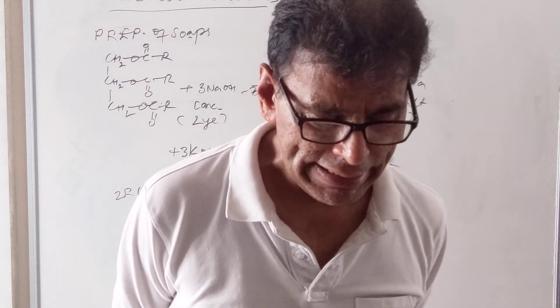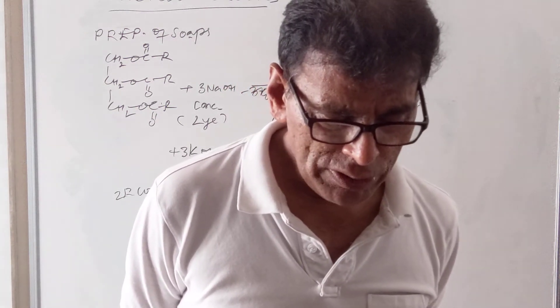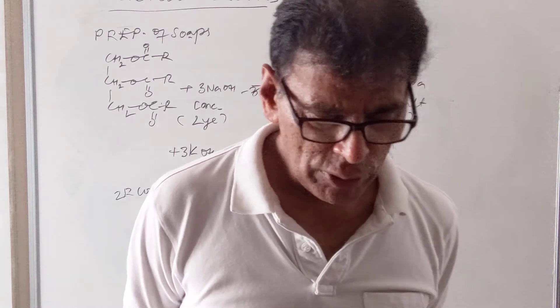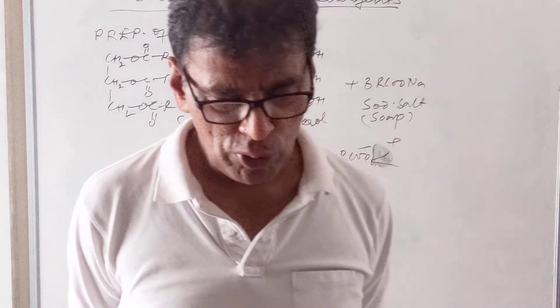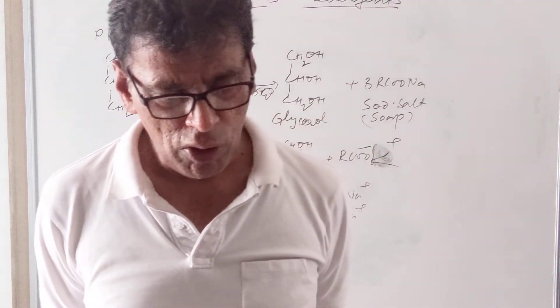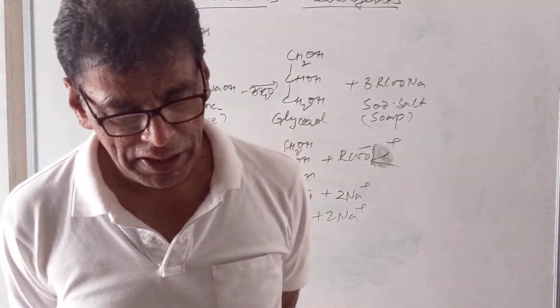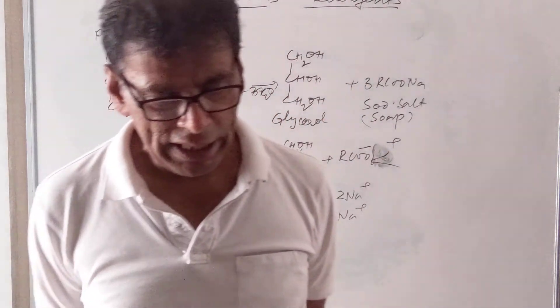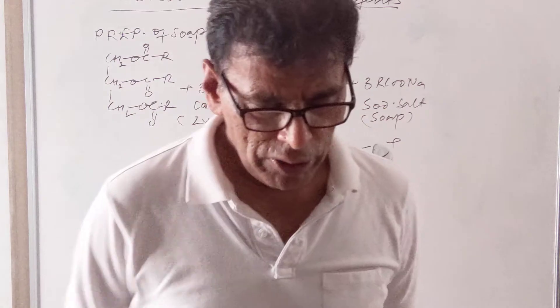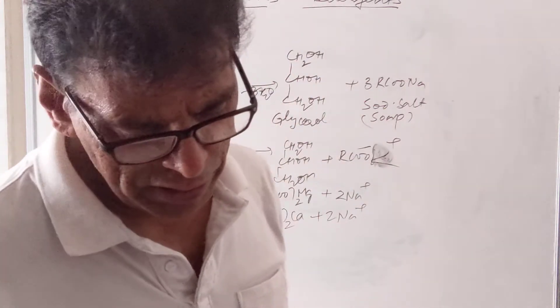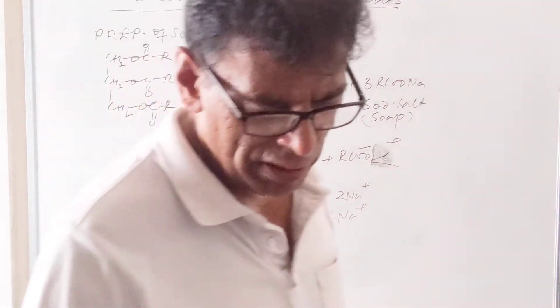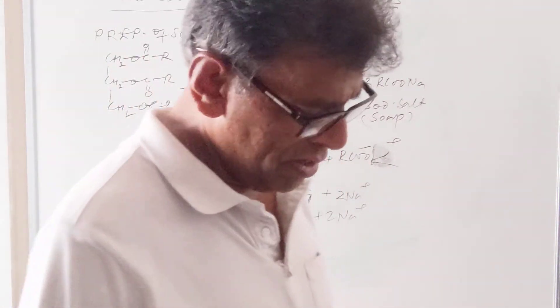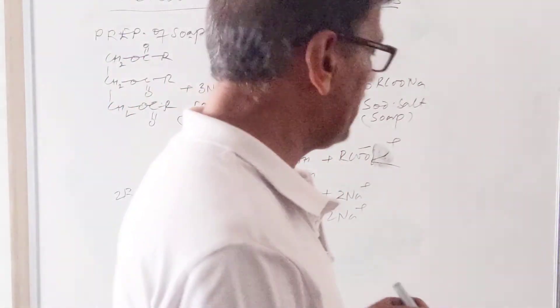A synthetic detergent is usually a sodium salt of a long-chain alkyl hydrogen sulfate, or a sodium salt of a long-chain benzene sulfonic acid. These are the two main types of long-chain sulfonic acid detergents.